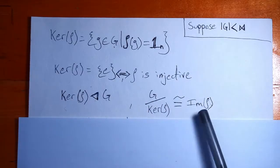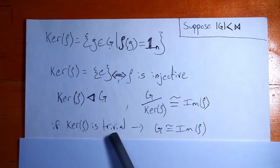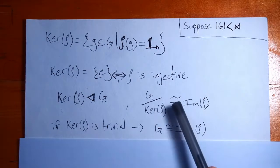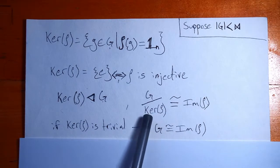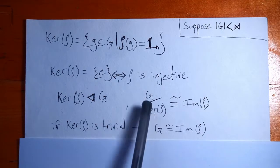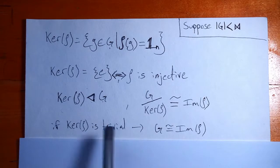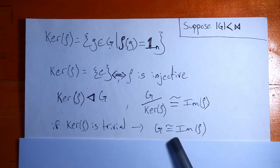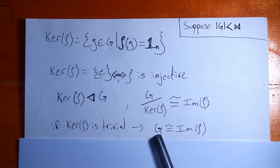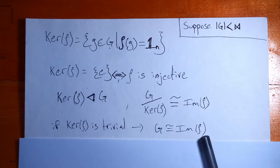So returning to our second isomorphism theorem, we have this equation right here. But if we assume that the kernel is trivial, then we're modding out, we're quotienting out, by a subgroup, a normal subgroup that only has one element. So when you quotient out by just the identity, you're just left with a group. So if our kernel is trivial, then we have that our group is isomorphic to the image of our homomorphism, the image of our representation. Our group is isomorphic to the set of matrices that get mapped to under our representation.